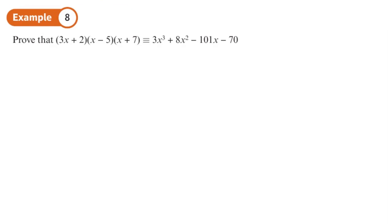This example proves that these three brackets expanded is equivalent to the expression on the other side. We'll do this by expanding the brackets. Start with the first two: 3x plus 2 times x minus 5. That gives you 3x squared minus 15x plus 2x minus 10, so 3x squared minus 13x minus 10.